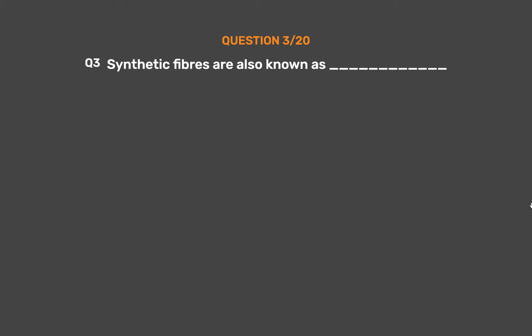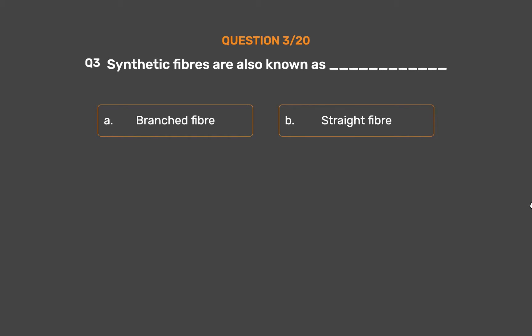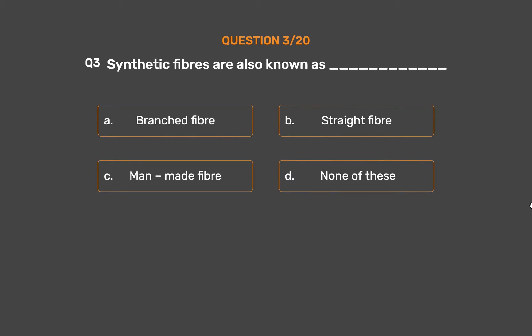Question Number 3. Synthetic fibers are also known as ___. Option A: Branched fiber. Option B: Straight fiber. Option C: Man-made fiber. Option D: None of these.